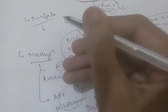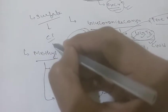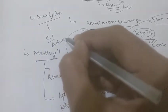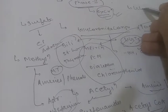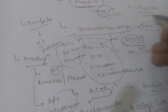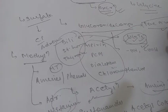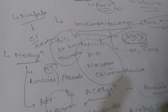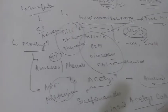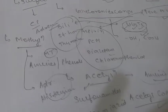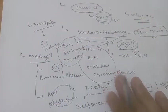The next reaction is sulfate conjugation, where phenolic compounds and steroids are sulfated by sulfotransferase enzymes. Common examples include paracetamol, adrenaline, and corticosteroids. There is also glycine conjugation, where salicylates, nicotinic acid, and other drugs with a carboxylic acid group are conjugated with glycine, though this is not a major pathway of metabolism.